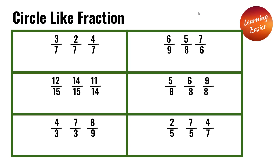4 over 3, 7 over 3, and 8 over 9 are unlike fractions because they have different denominators. 2 over 5, 7 over 5, and 4 over 7 are unlike fractions because of different denominators.